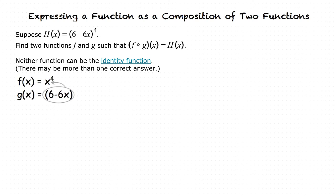In order to double check an answer, substitute x in the outer function for the inner function. In this case, this results in 6 minus 6x to the power of 4.